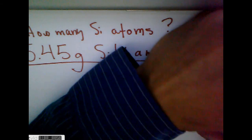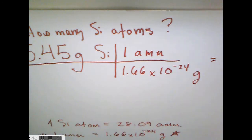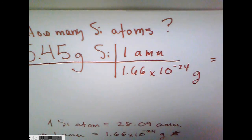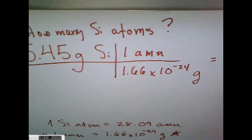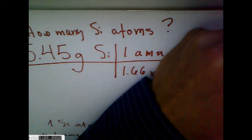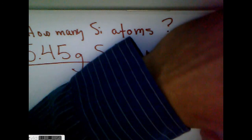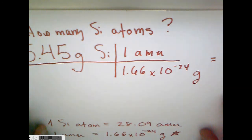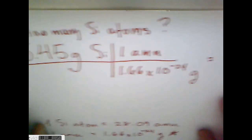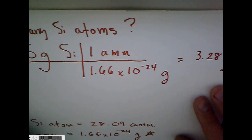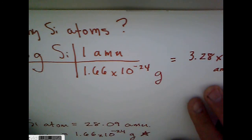Now if I do the math — which someone will do for me, I hope. The result is 3.28 times 10 to the positive 24th. Wait, is that correct? Yeah, all right, that makes sense. So that's in AMUs — atomic mass units.